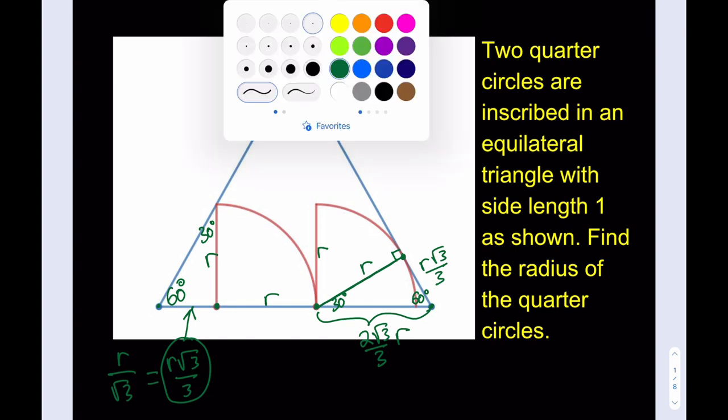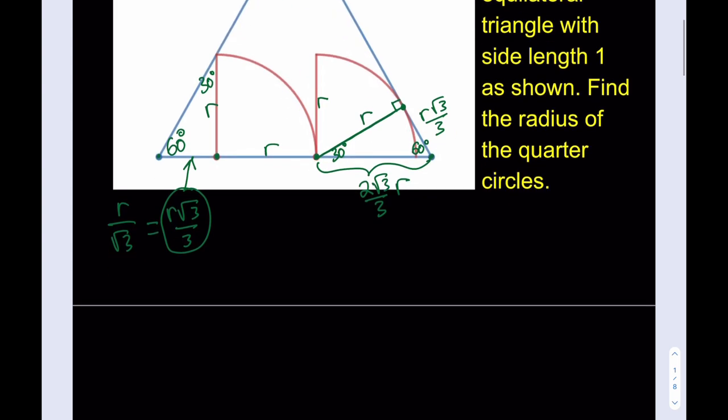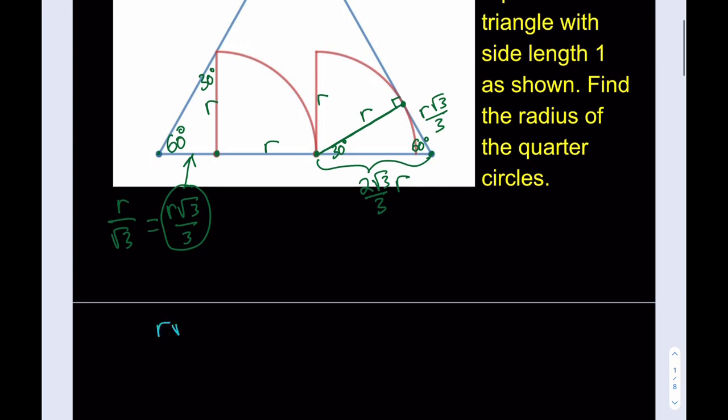Beautiful. So, we can go ahead and proceed from this point on, I think, like with this one. What do we know? We know that this is R root 3 over 3 plus R plus 2R root 3 over 3.